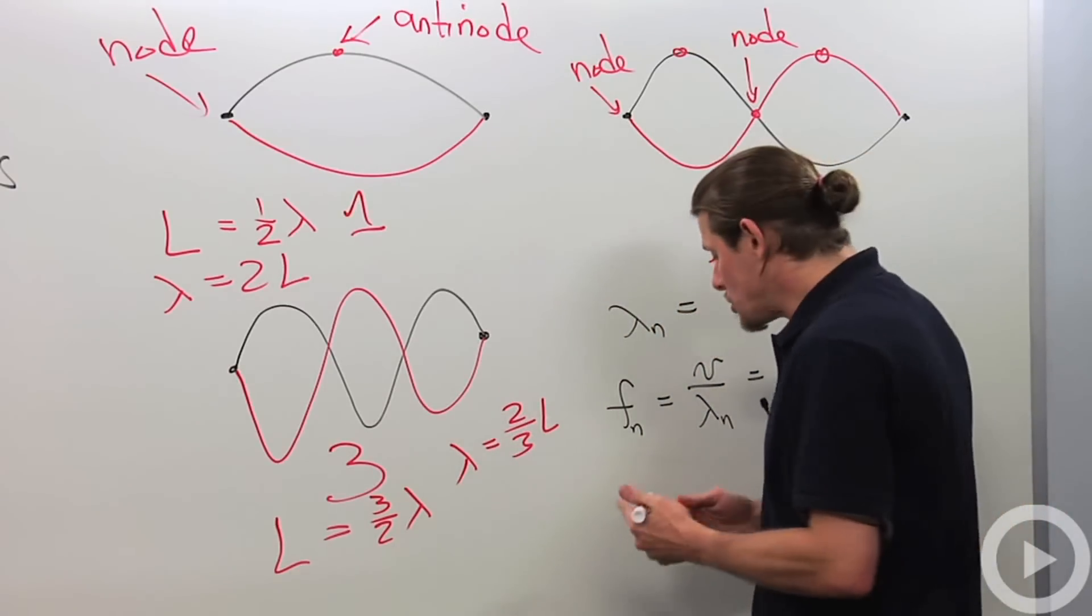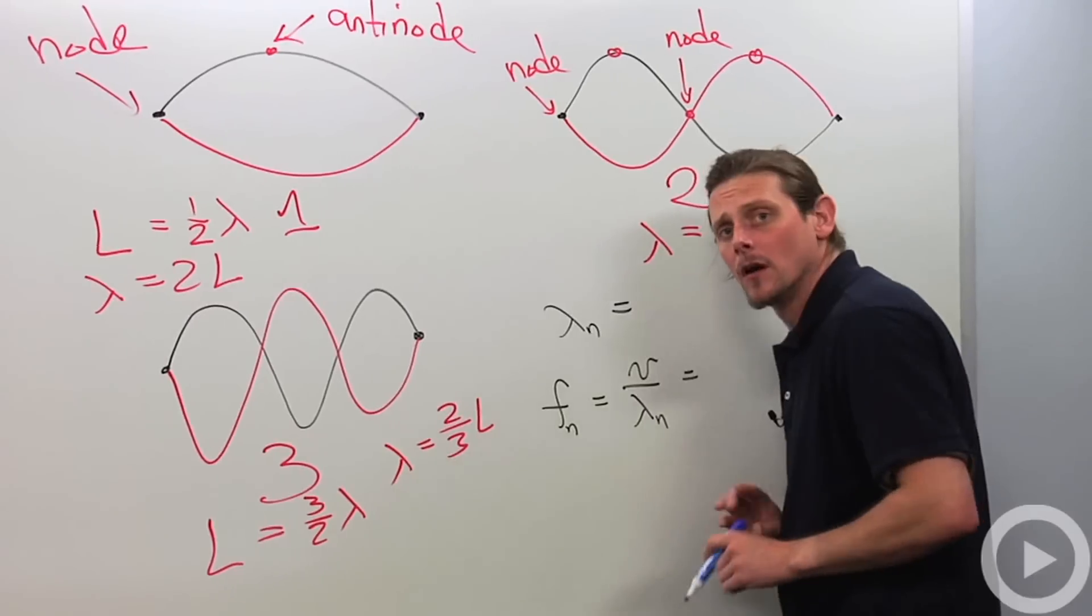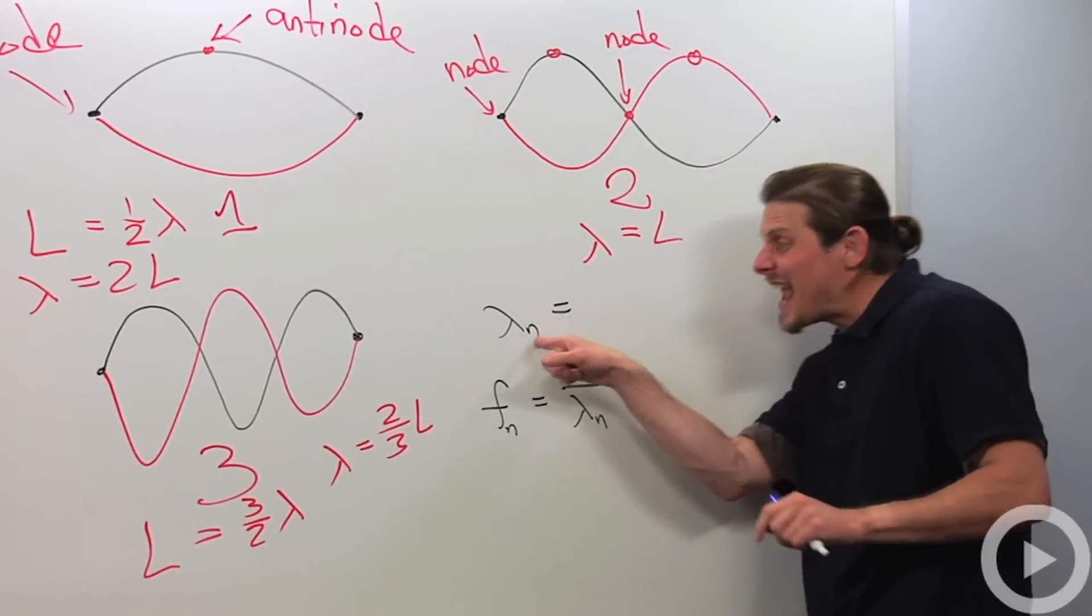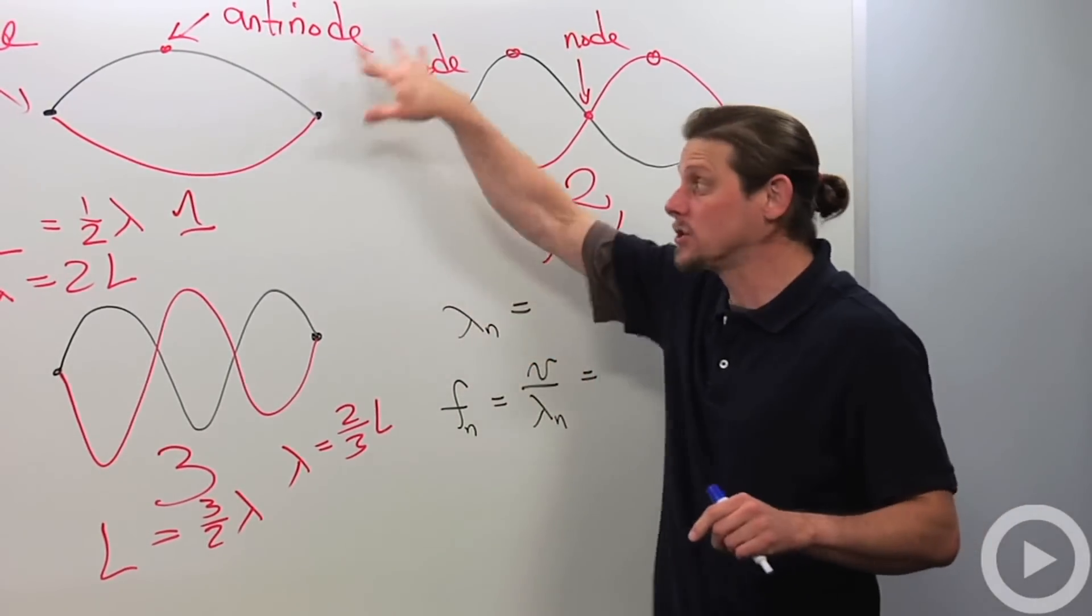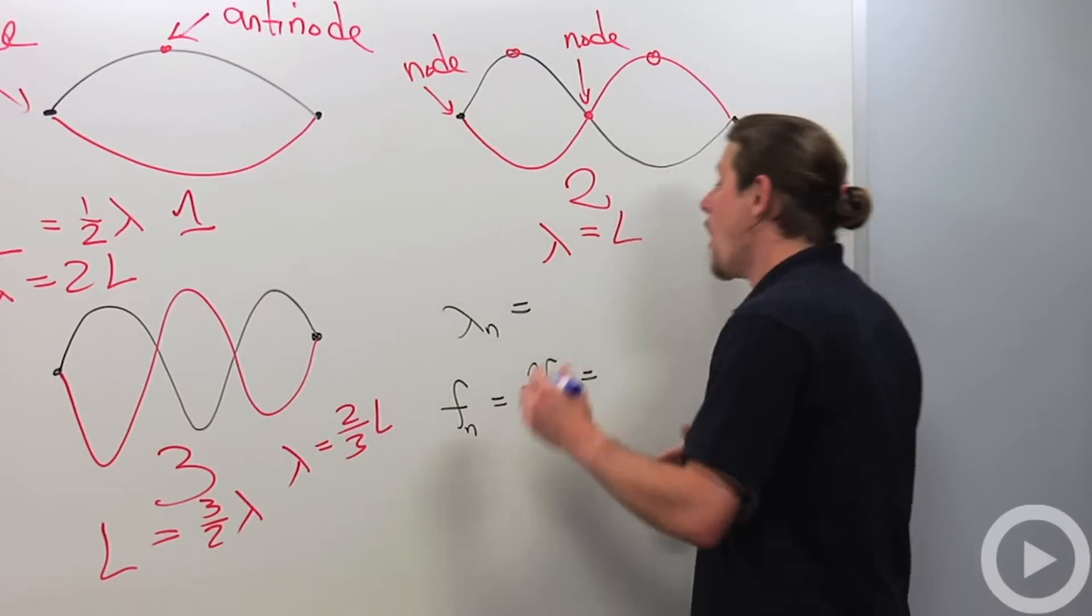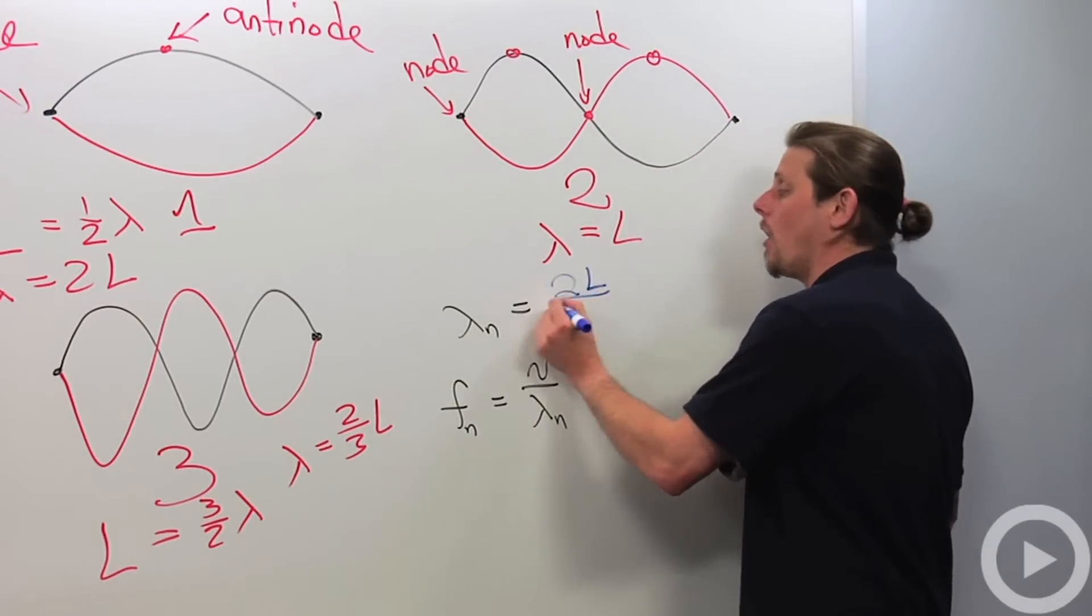In general, you should be able to convince yourself that the wavelength of the nth harmonic, these are called harmonics, will be given by two L over N.